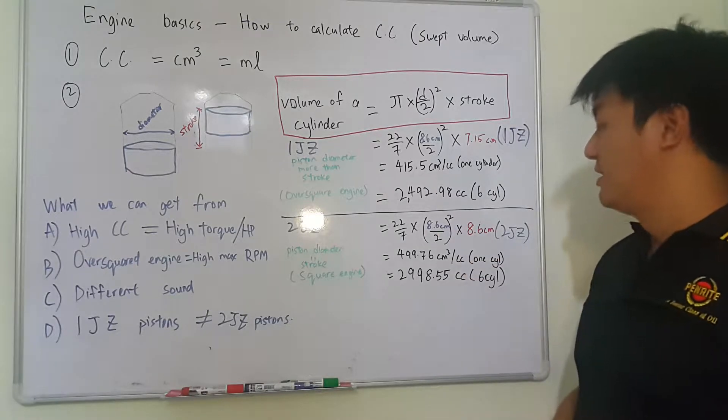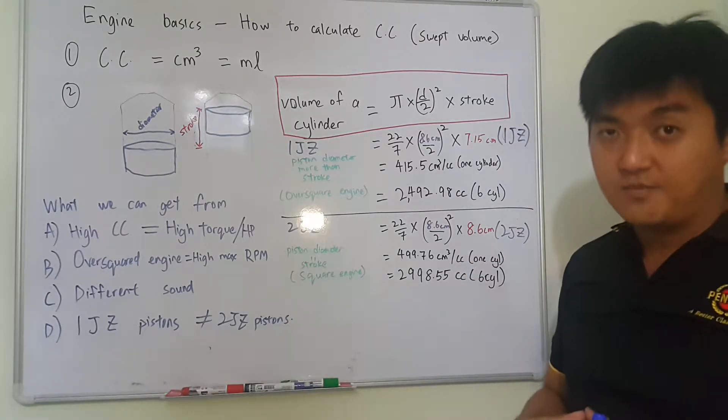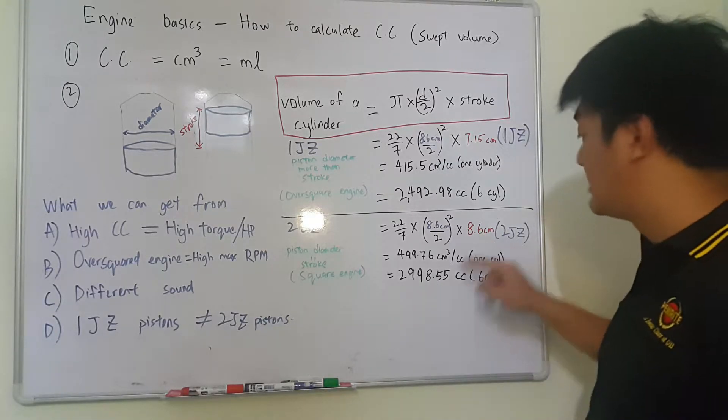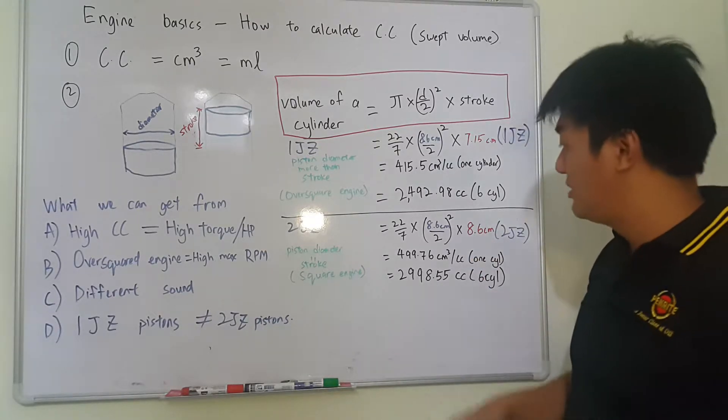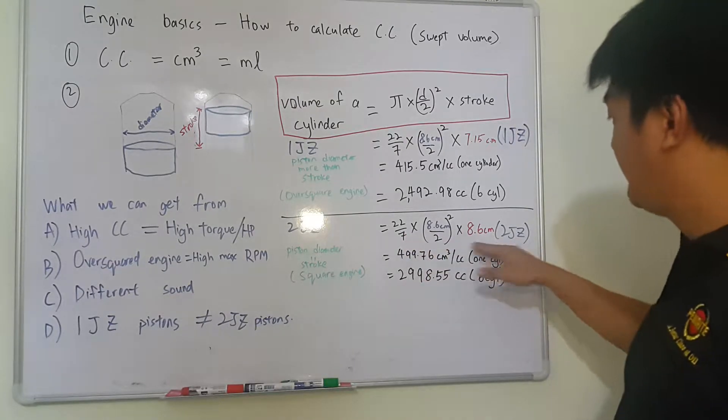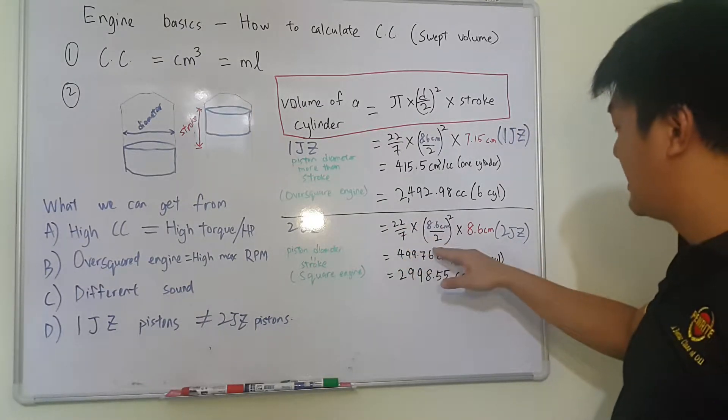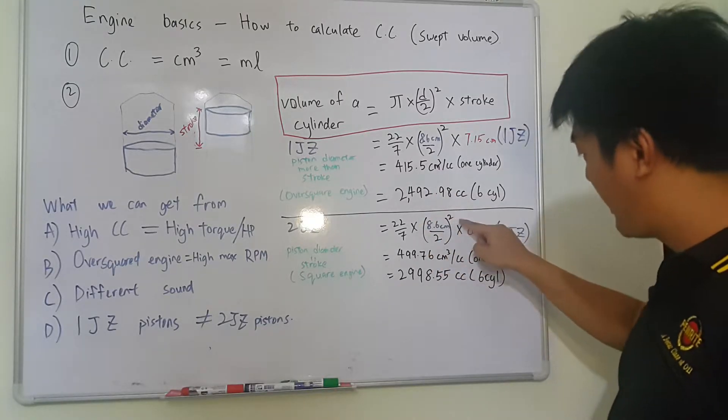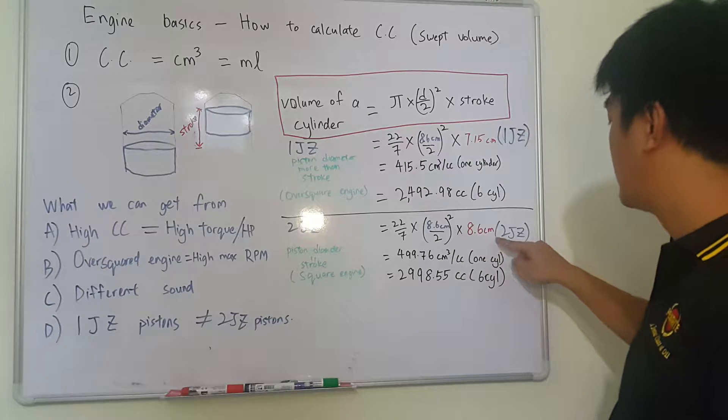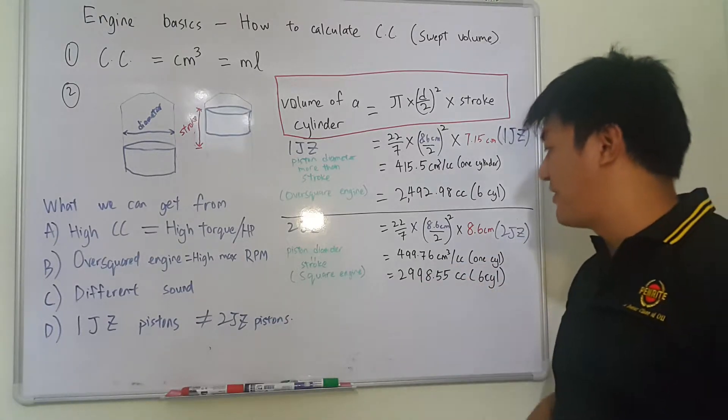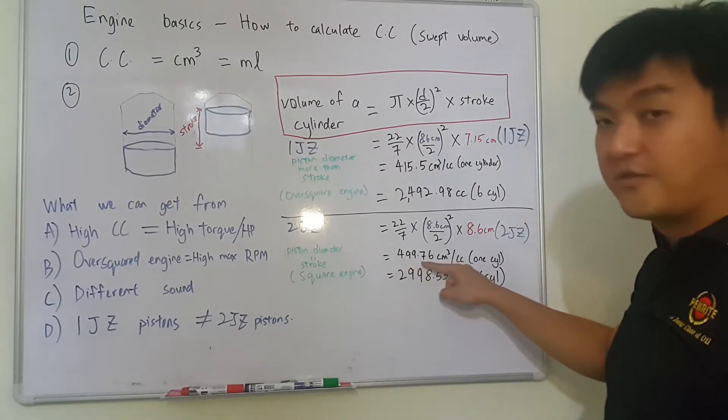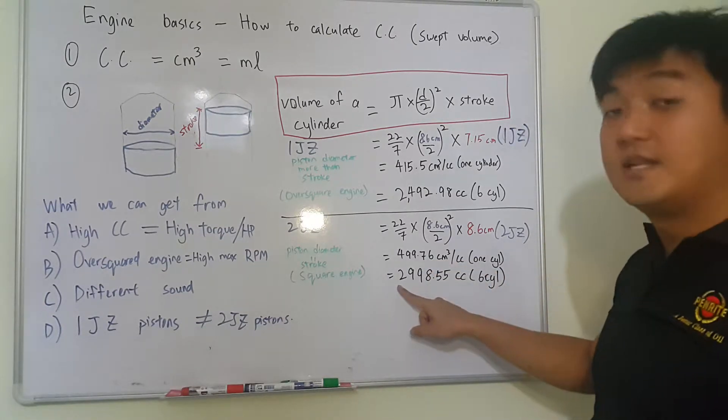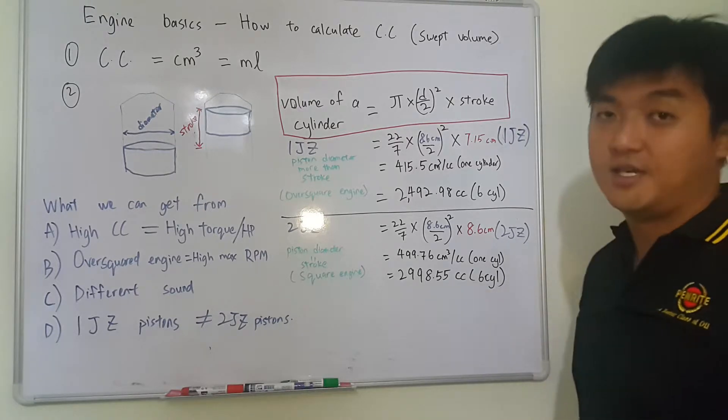Alright, so in 2JZ, the piston's diameter is the same, 86mm, but the stroke is 86mm too. So we copy everything into cm, you times 22 over 7, times 8.6cm divided by 2, this whole thing squared, times 8.6cm. So we can get slightly less than 500cc, 499.76 cm³, times 6, 6 cylinders, we can get almost 3000cc.